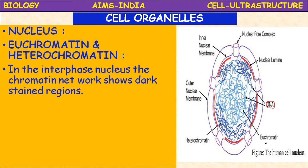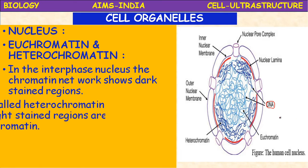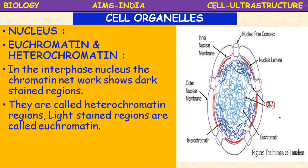Duplication occurs so that the daughter cells formed after cell division can also possess the same number of chromosomes as the parent cell. During interphase, the nucleus and chromatin network show dark-stained regions, which are called heterochromatin regions. The nucleolus imparts color to the chromosomes and chromatin material.